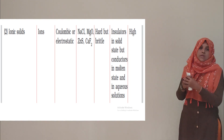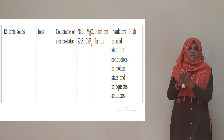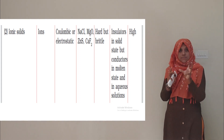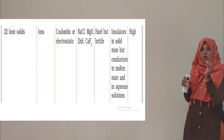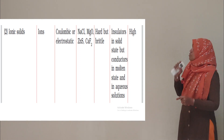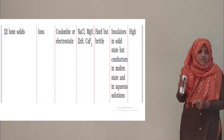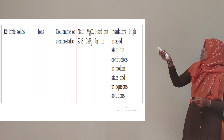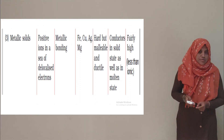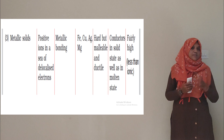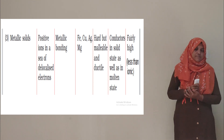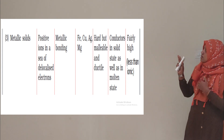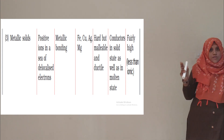Ionic solids conduct electricity in molten state or when dissolved in water, because ions are free to move. In solid state, ionic solids are insulators. The third type of crystalline solid is metallic solid.